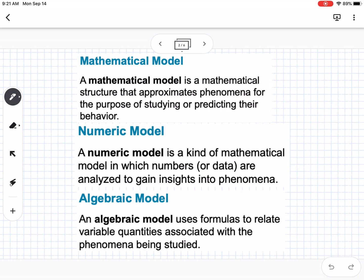The three models we're looking at in this section: a mathematical model is a mathematical structure that approximates phenomena for the purpose of studying or predicting their behavior. A numeric model is a kind of mathematical model in which numbers or data are analyzed to gain insights into phenomena. And an algebraic model uses formulas to relate variable quantities associated with the phenomena being studied.